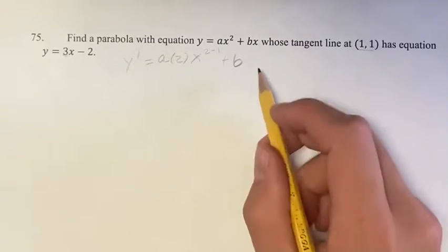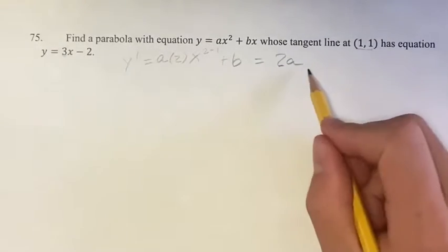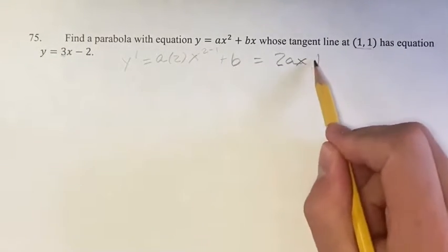Okay, this simplified is 2ax to the 2 minus 1, which is x to the first power, which is just x, plus b.